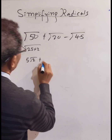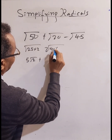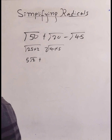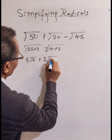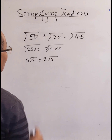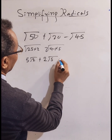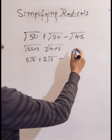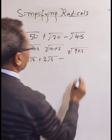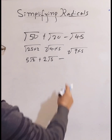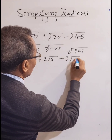Square root of 20 is 4 times 5, and square root of 4 is 2, so that's 2 root 5. Square root of 45 is 9 times 5, and square root of 9 is 3, so that's 3 root 5.